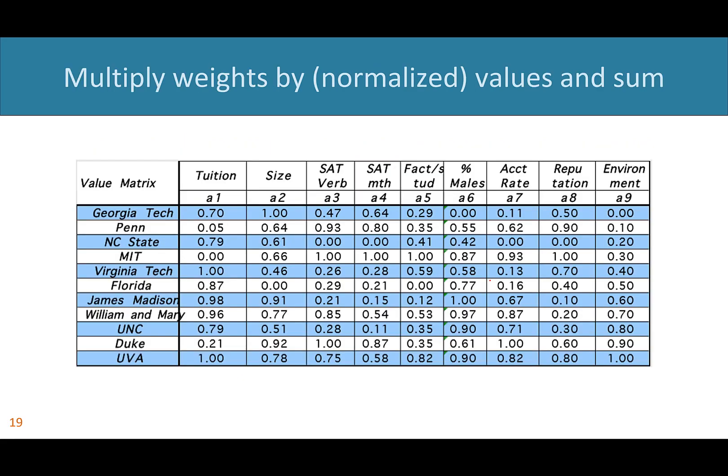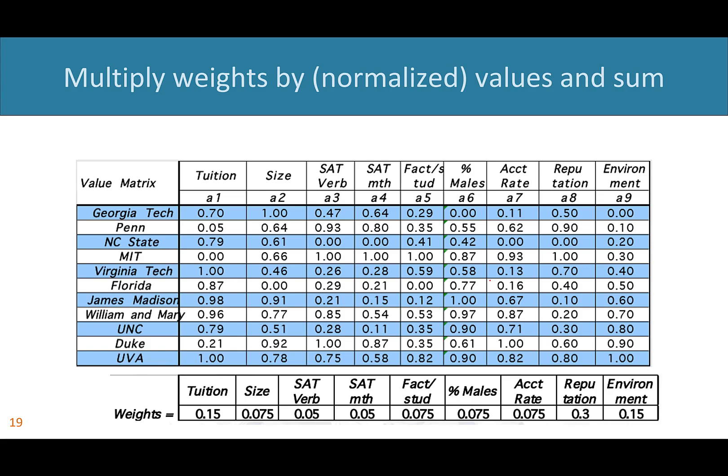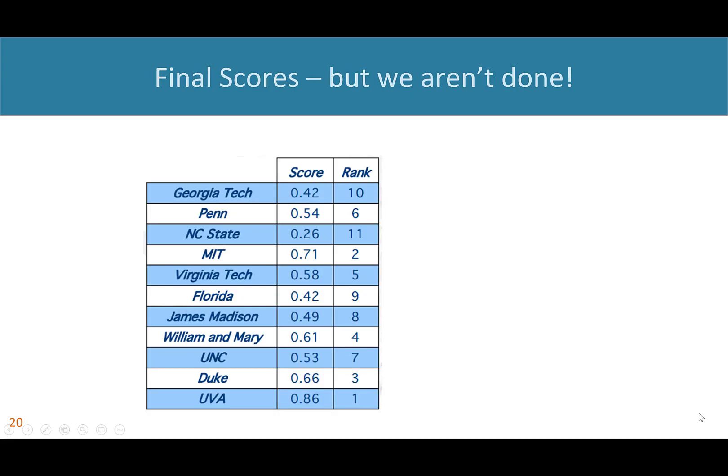Now we have our normalized values. Let's say we've calculated our weights based on our marginal rates — here are the weights shown at the bottom of the screen. It's typical practice to have the weights sum to one. All we do is multiply the weights by the normalized values and sum them up for each school. Here are our scores.